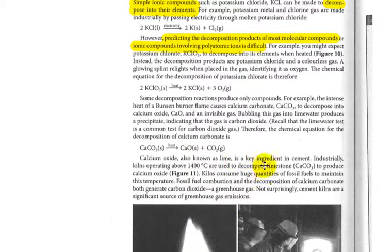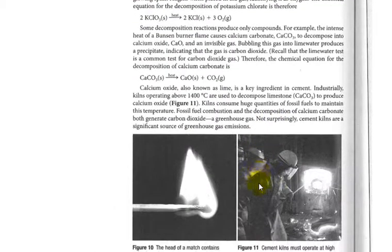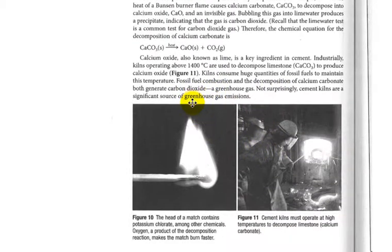Calcium oxide, also known as lime, is a key ingredient in cement. Industrially kilns operating above 1,400 degrees C are used to decompose limestone into calcium oxide and carbon dioxide. You can see a real-life application there.